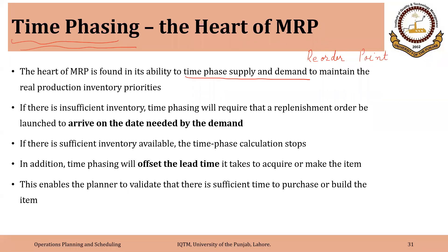If there is insufficient inventory, time phasing will require that a replenishment order be launched to arrive on the date needed by the demand. In the case of insufficient inventory, the order is placed — either a purchase order or production order — in the relevant time bucket so that inventory arrives on the date needed by the demand. If there is sufficient inventory available, then the time phase calculation stops. The time phasing will also offset the lead time, which is very important. The lead time offset is used to acquire or make the item, and this enables the planner to validate that there is sufficient time to purchase or build that item.